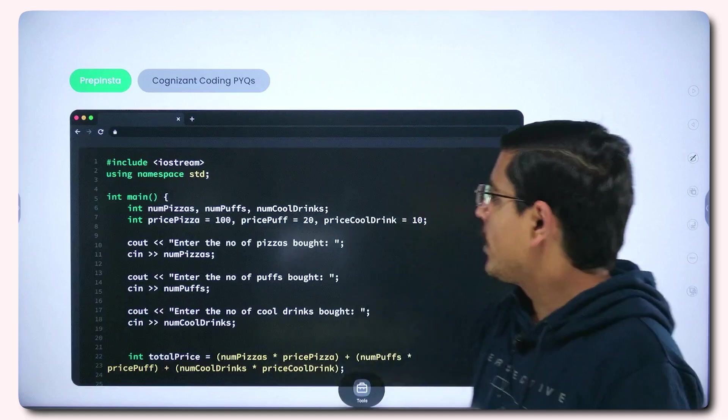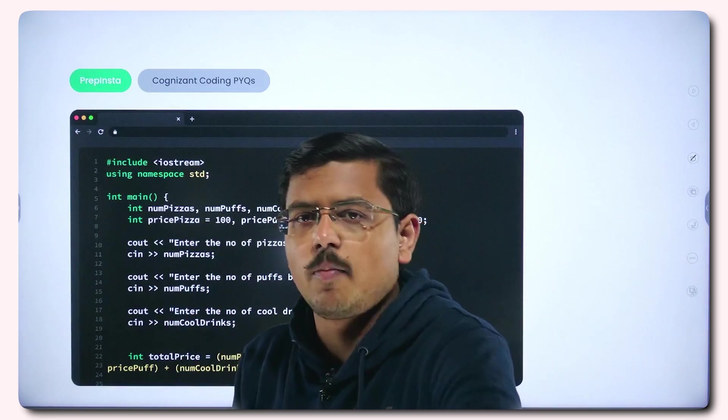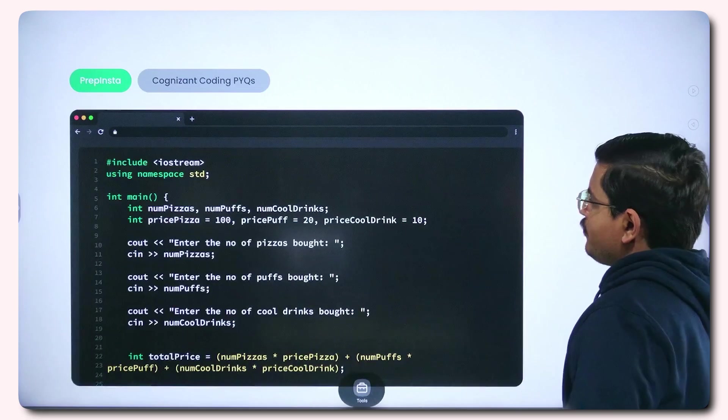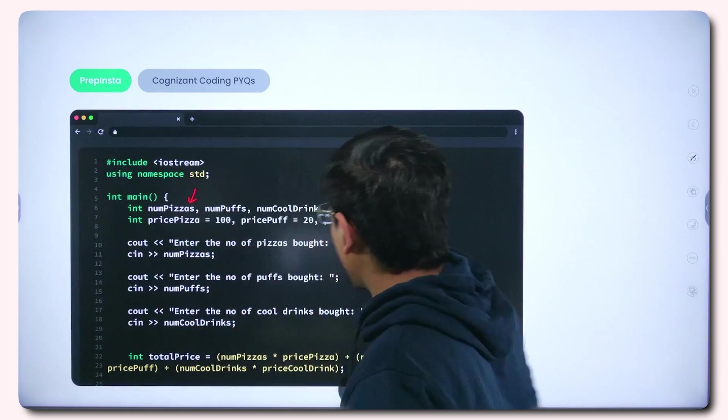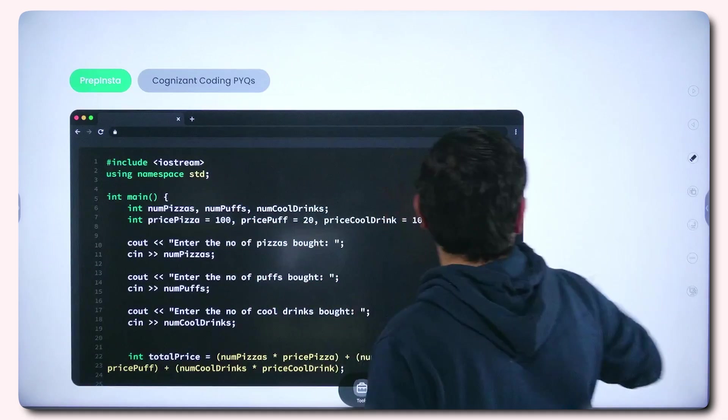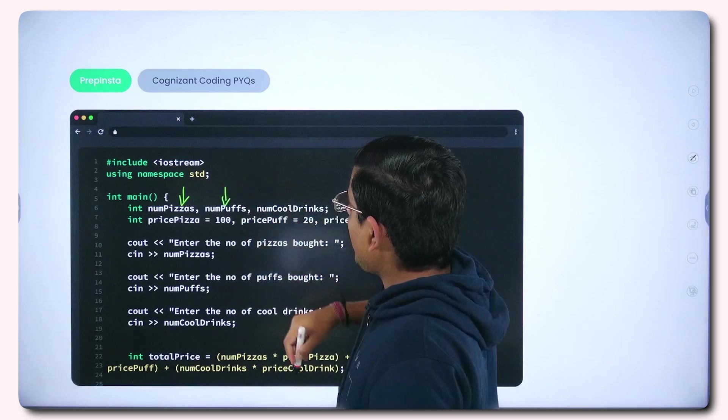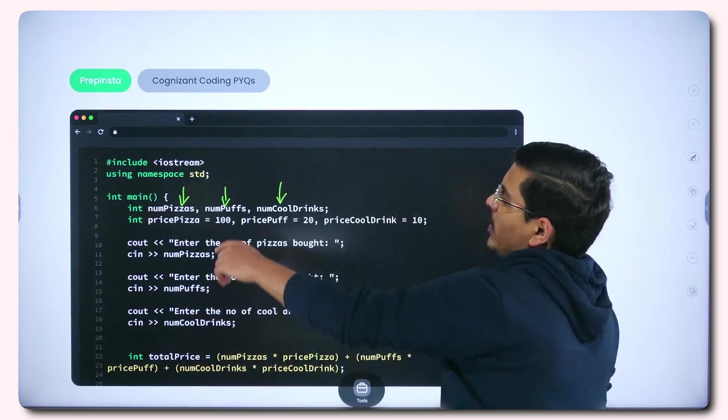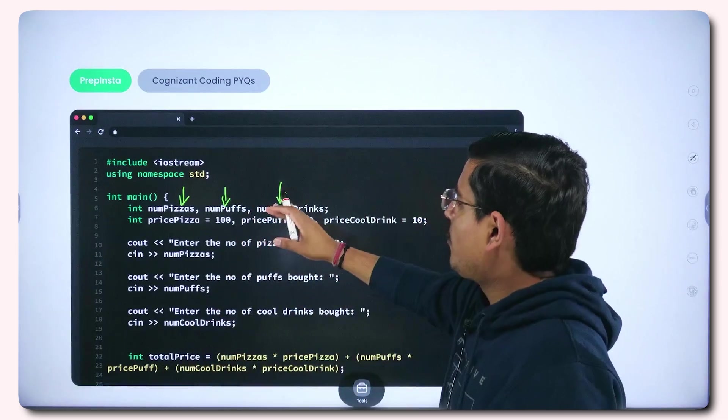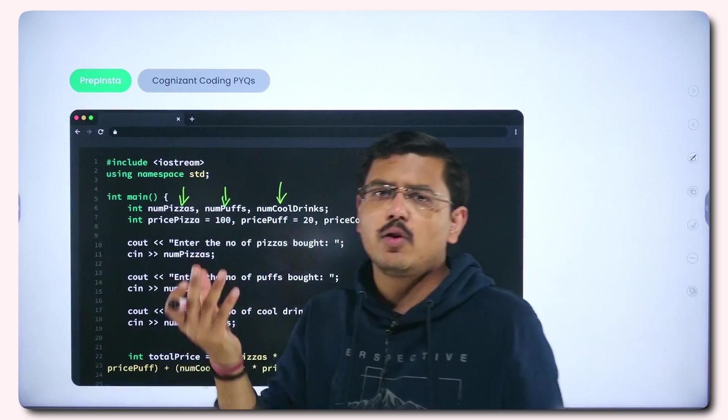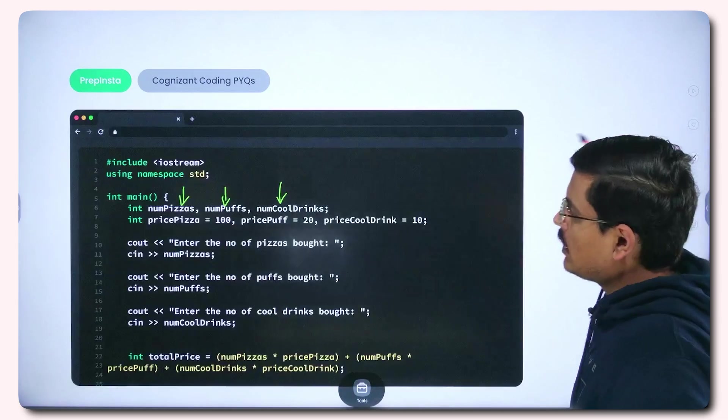Let's go ahead and understand the coding portion. This is the code piece that you will encounter or that you should use or you can solve through this. Now this is in C++. If you want to write it in Java or Python, it's your wish, that's perfectly fine. Here, first thing is I introduced three variables: numPizzas, which is basically number of pizzas; number of puffs and number of cool drinks. So you have three particular variables for number of pizzas, for number of puffs, for cool drinks. You have proper number for them. So basically you are having an integer variable where you will store the count of pizzas that you bought.